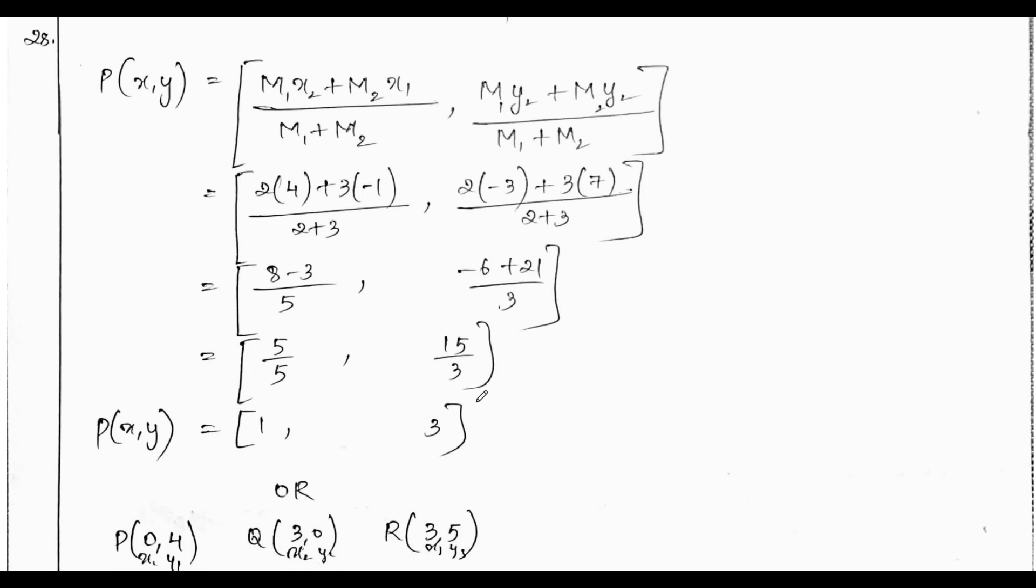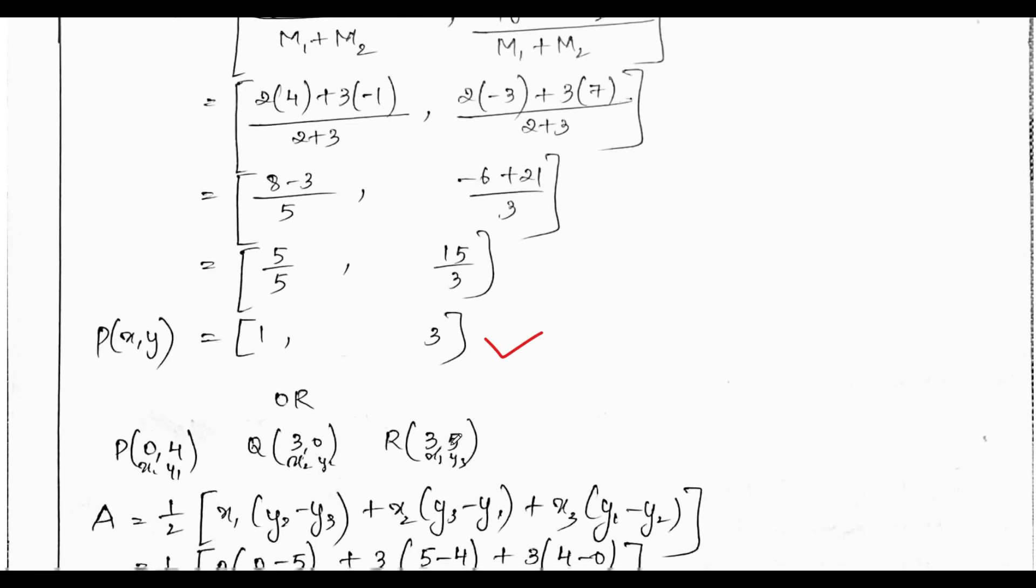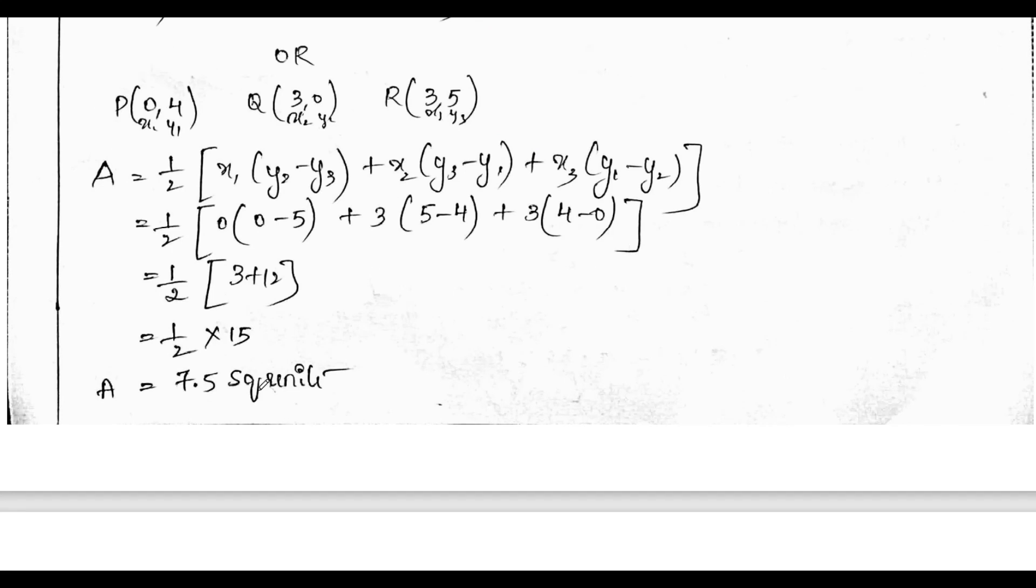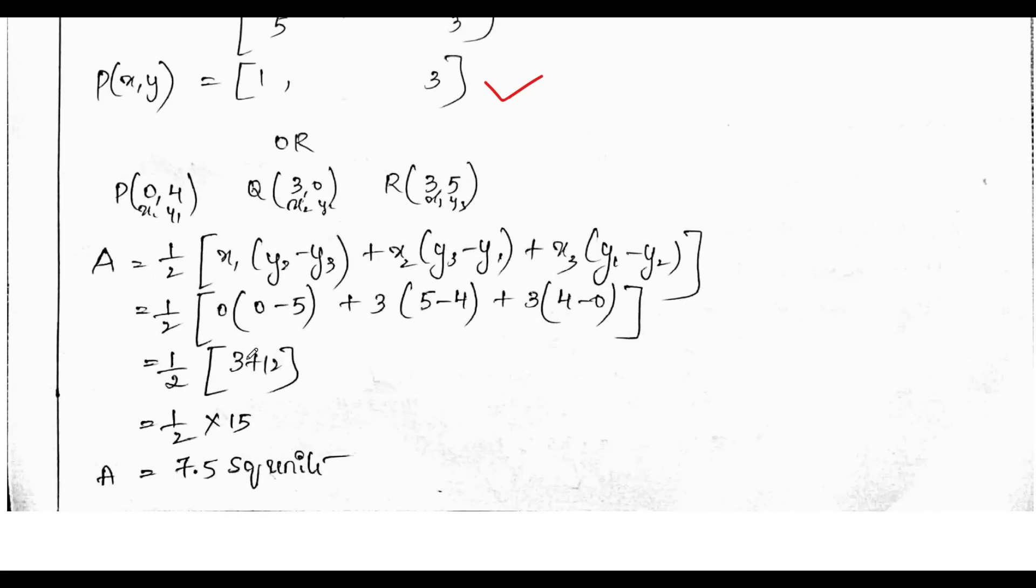Section formula based on section formula 3 marks. It is a direct question from the textbook also. It is in my worksheet. We get P of x, y equals 1, 3. Then the area of triangle is 7.5 square units. Very simple question.